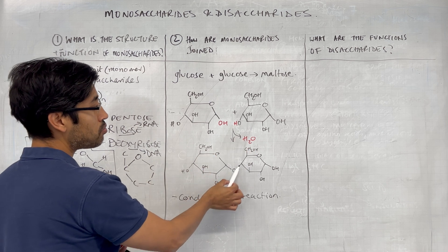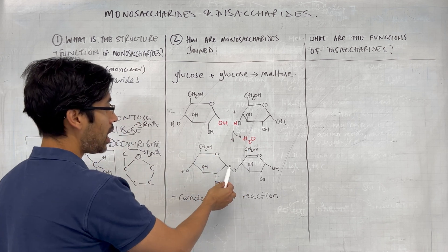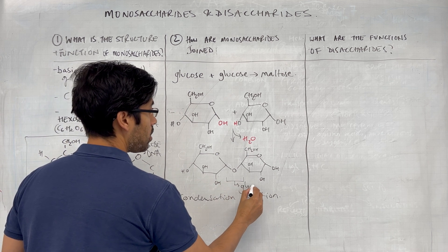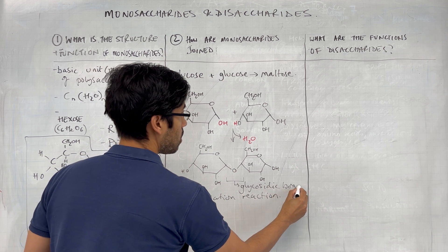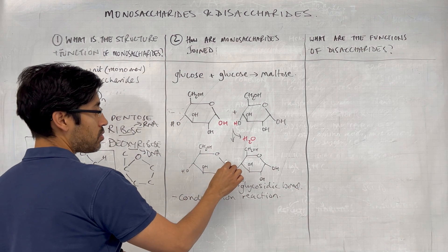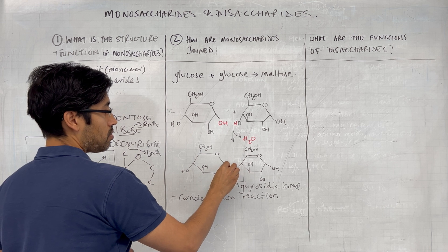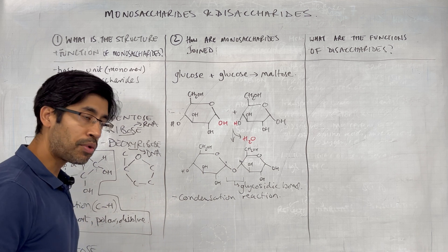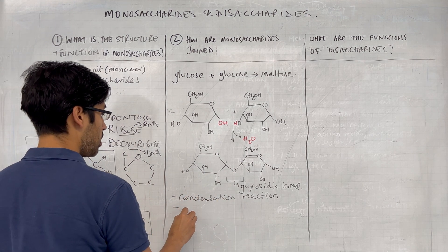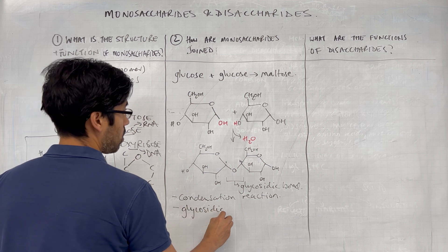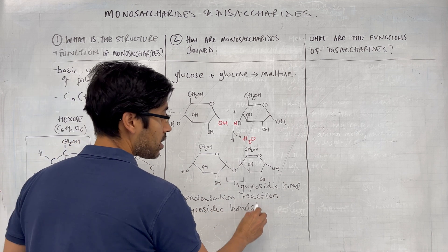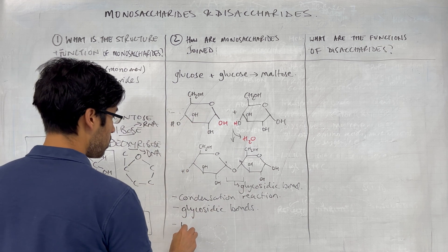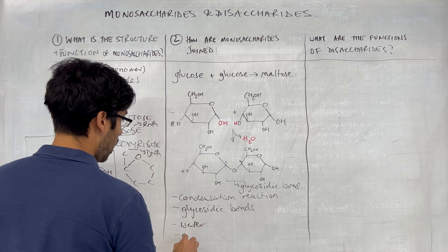That carbon then forms a bond to the oxygen of the OH group of the neighboring glucose molecule. And in doing so, it makes a bridge between the molecules, and that bridge is called the glycosidic bond. Often kind of also labeled with the carbons that it joins, so that's a 1,4 glycosidic bond. So condensation reactions, glycosidic bonds. And there we have it, and water is produced.